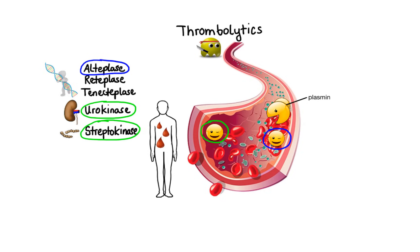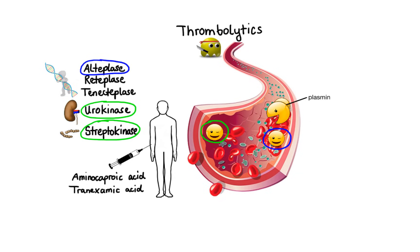Bleeding complications from thrombolytic therapy can be managed by administration of aminocaproic acid or tranexamic acid. These agents stop fibrinolysis by inhibiting binding of plasminogen to fibrin as well as conversion of plasminogen to plasmin. And with that, thank you for watching — I hope you enjoyed this lecture, and as always, stay tuned for more.